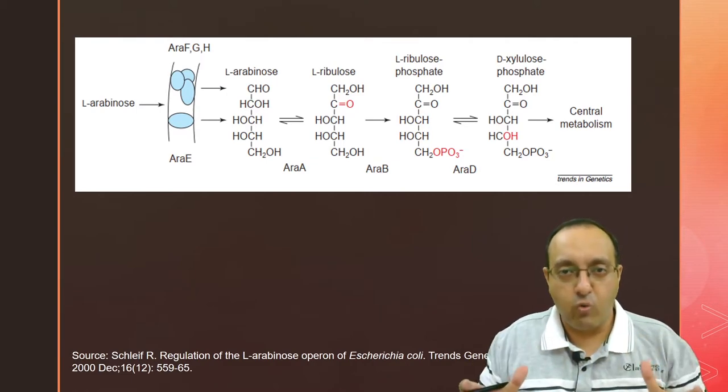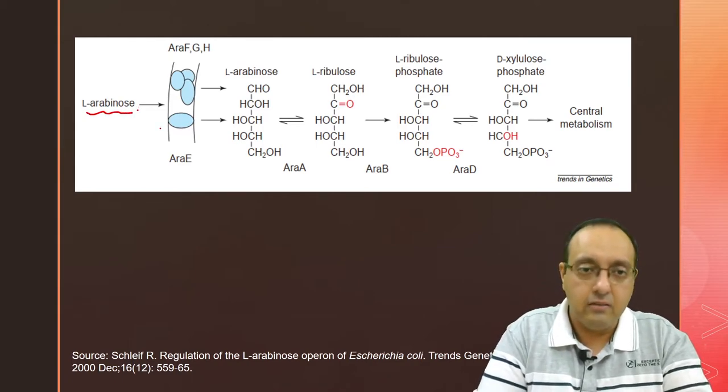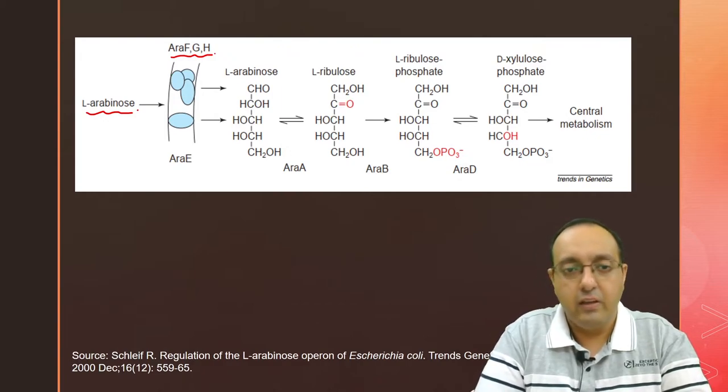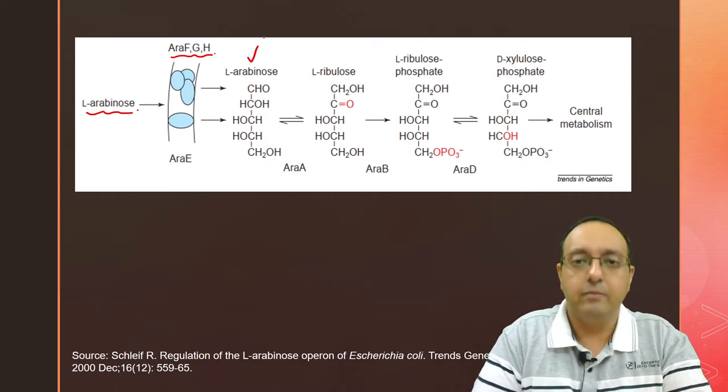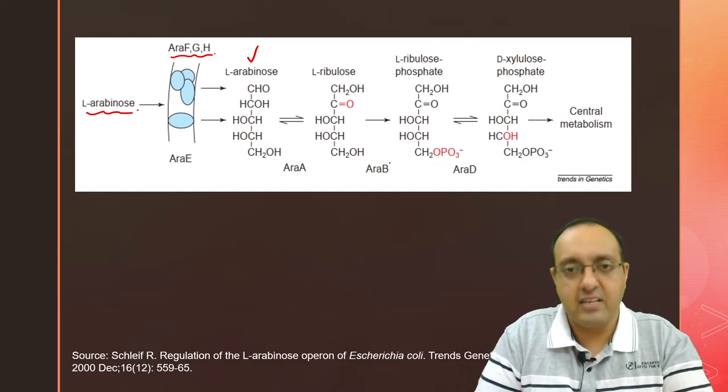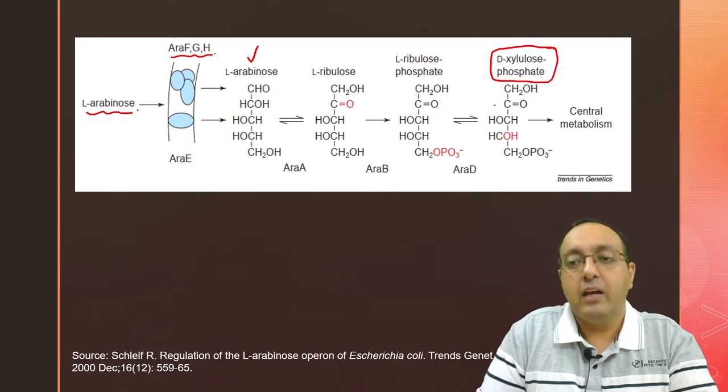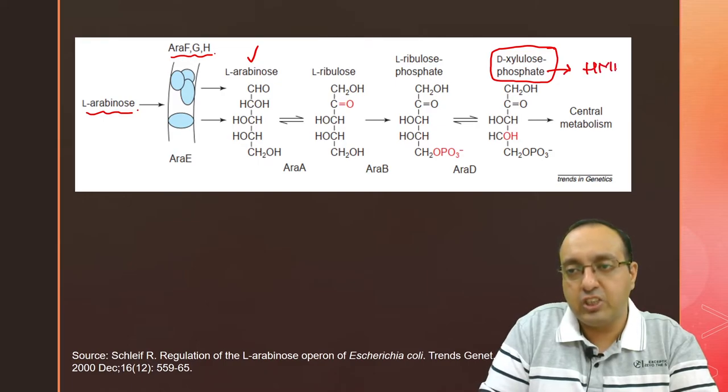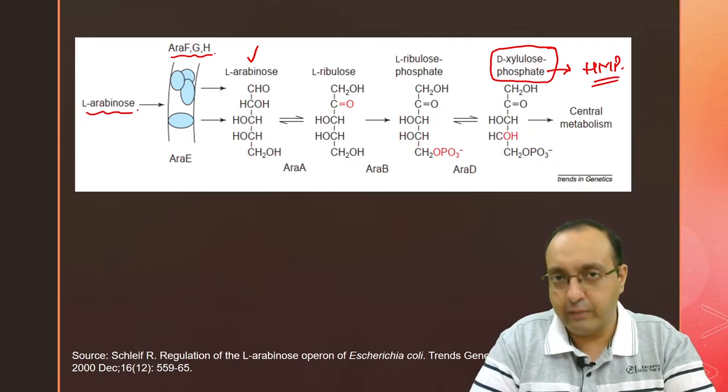Here we have the overall general schematic. We have L-arabinose outside the cell. It is imported by the complex of araF, G, and H. AraE is also involved in bringing arabinose inside the cell. Then with araA, B, and D proteins, these enzymes convert it finally to xylulose 5-phosphate. Xylulose phosphate is taken to hexose monophosphate shunt, the HMP pathway, one of the central pathways of metabolism.